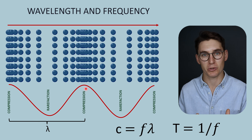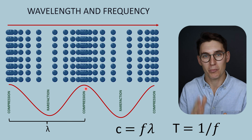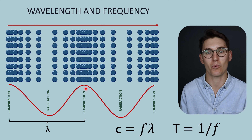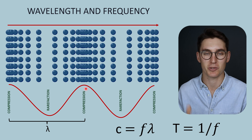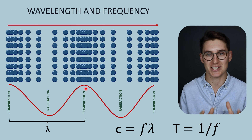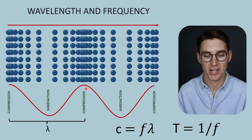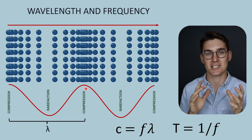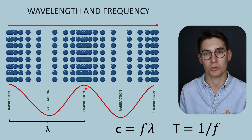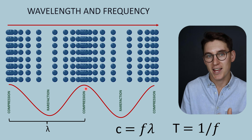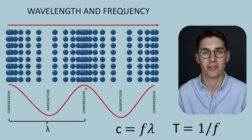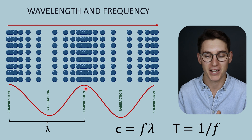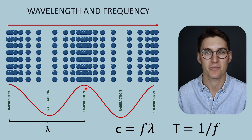We then discussed frequency, which is the number of cycles of a wave that pass a particular point in a given period of time, and we measure frequency in hertz. We then looked at the speed of sound, which determines the distance traveled over a period of time by this sound wave.